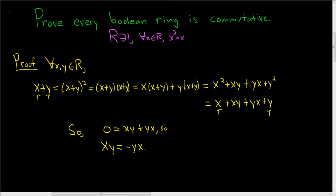Now, recall that in a previous video, we proved that in a Boolean ring, the characteristic is 2. So in particular, y plus y is equal to 0. So this means that y is equal to negative y.